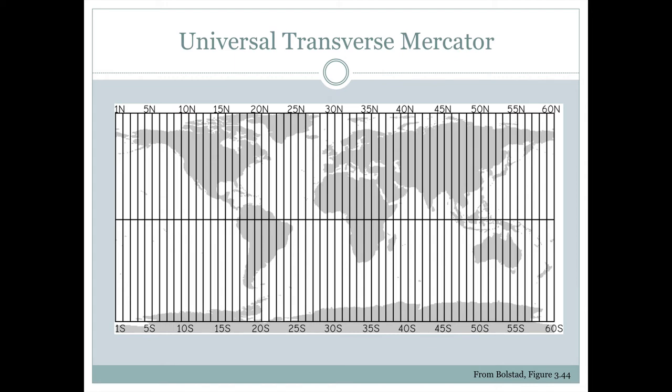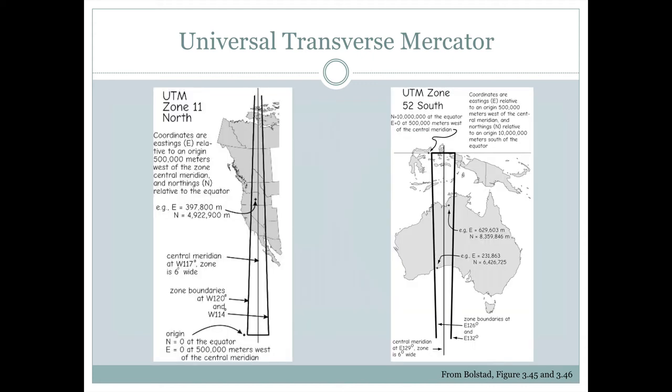There's also another grid for the south, from zone 1 south to 60 south, divided at the equator line. Each of these zones, if we looked at them on a map, would decrease in width as we move towards the north pole if we're north of the equator, or decrease in width as we move towards the south pole if we're south of the equator.